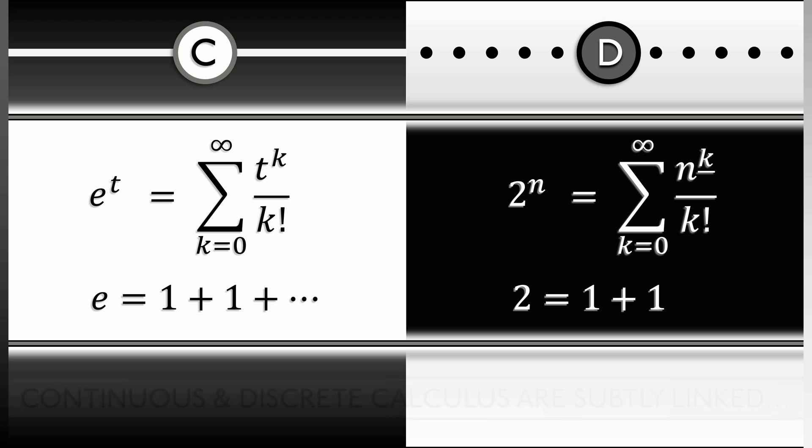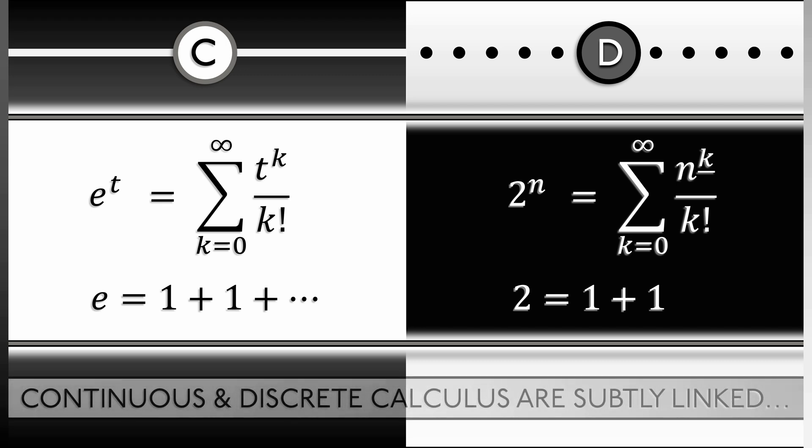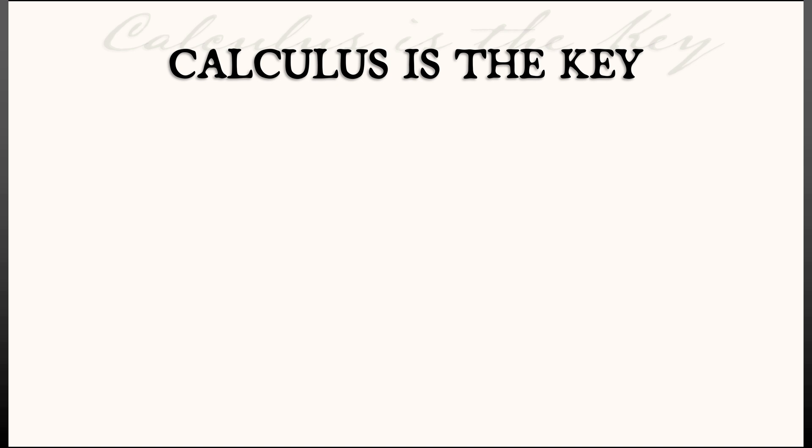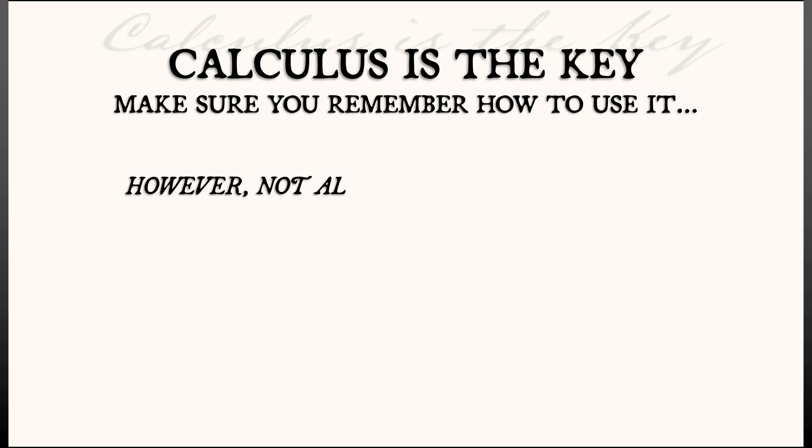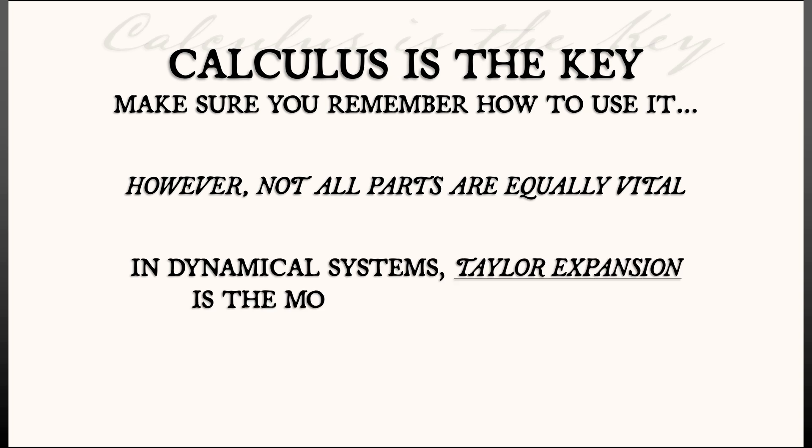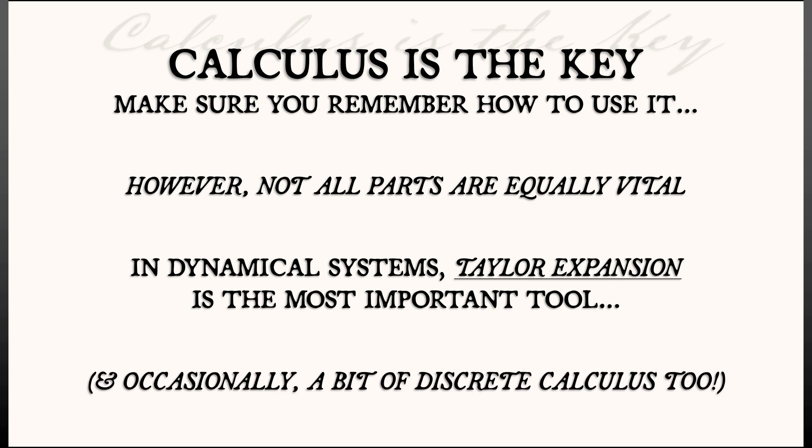Overall, what we've seen in this chapter is that calculus is really key to what we're going to do. Make sure you remember the basics. However, not all parts of calculus are going to be equally useful to our story. In our story, Taylor expansion is going to be the most important tool, and occasionally we'll use a little bit of discrete calculus, too.